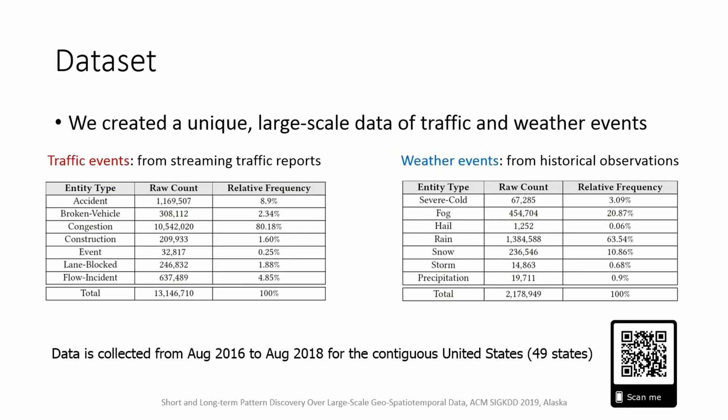In this work, we created a new countrywide dataset of traffic and weather entities or events. Examples of traffic events are accident, congestion, and construction. Examples of weather events are rain, snow, and storm. In total, our dataset contains more than 13 million traffic and more than 2 million weather events.